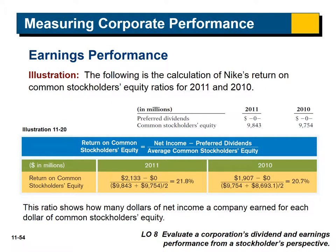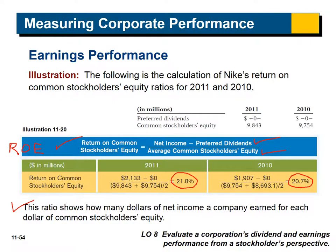Another measure of performance is return on common stockholders' equity, often called return on equity or ROE. The formula is net income minus preferred dividends, divided by average stockholders' equity. For example, 21.8% in 2011 and 20.7% in 2010. This ratio shows how many dollars of net income a company earned for each dollar of stockholders' equity. A result of 21.8% means for every dollar of equity invested, investors earn almost 22 cents.